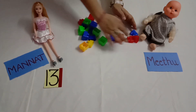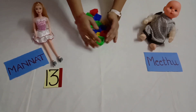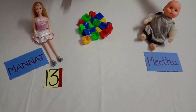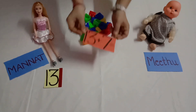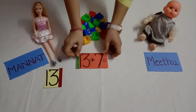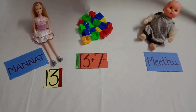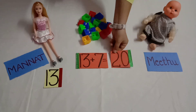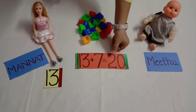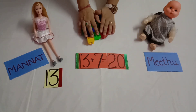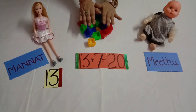They gathered their blocks again. See — 13 plus 7 is equal to 20, because all the blocks were 20.